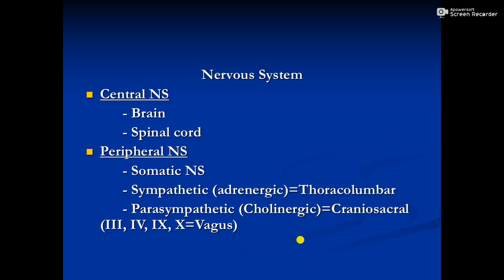The cholinergic nervous system, as its name indicates, is controlled by the primary neurotransmitter acetylcholine, while in the case of adrenergic, the primary neurotransmitters are noradrenaline, adrenaline, and in some cases dopamine is also there.